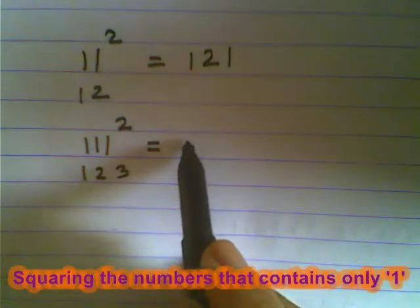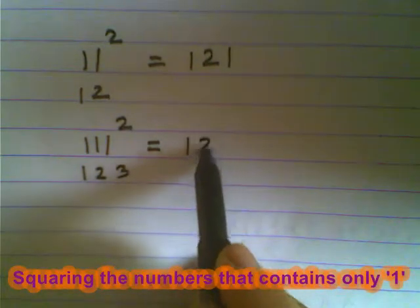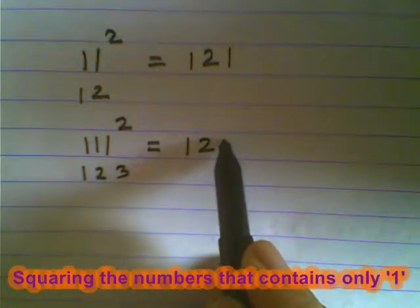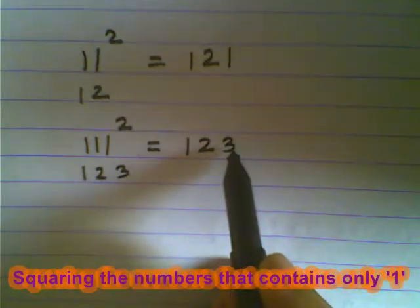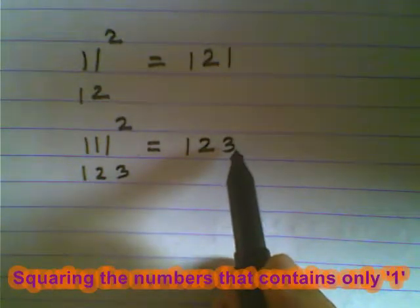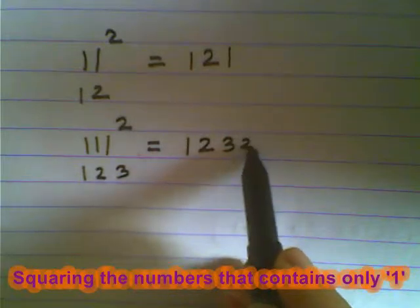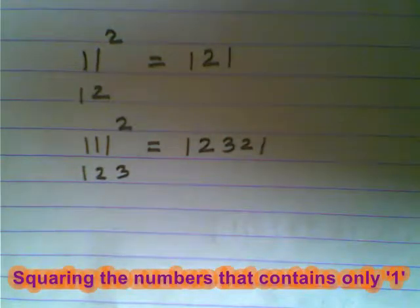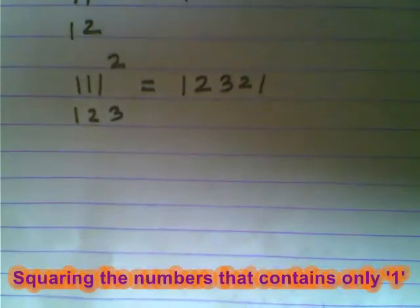So, you will write the answer as 1, 2 then 3 and go in a reverse direction as 2 and 1. See how simple it is.